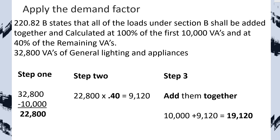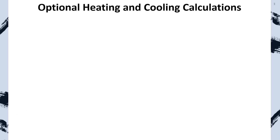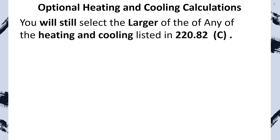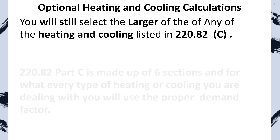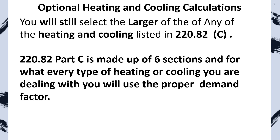For heating and cooling with the optional method, we still choose the larger of the two. These rules are laid out in 220.82(C) — there are six different parts and each one tells you exactly what to do. It's straightforward: once you've calculated the heating and the cooling, you simply select the larger of the two and add it to your reduced load to get your whole home load calculation.